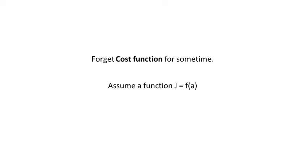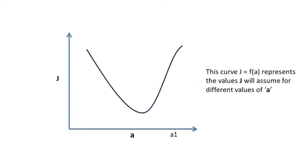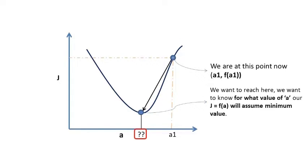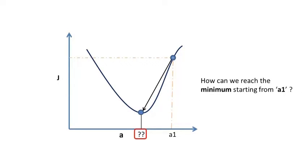Let's just forget cost function for some time. Assume a function, any regular function J equals f of a. This curve of J represents the values J will assume for different values of a. Indeed that is what makes it a function of a. We are at this point now, a1 and f of a1, and we want to reach here. We want to know for what value of a the function will assume minimum. How can we reach minimum starting from a1?